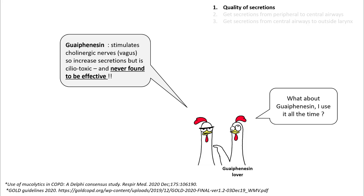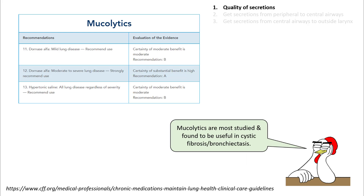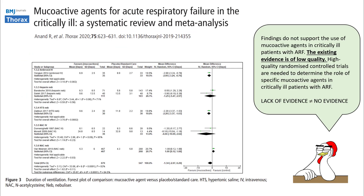Guaifenesin has never been found to be effective in pulmonary diseases. So if you have to use a mucolytic, use N-acetylcysteine, which has been shown to reduce COPD exacerbation in outpatient settings. Mucolytics are more studied and found to be useful in cystic fibrosis and bronchiectasis patients. Mucolytic agents in acute respiratory failure in the ICU have not been studied very well — in the latest meta-analysis by Anand et al., they did not find enough studies to guide decisions. At this time, we do not know whether these medications help.